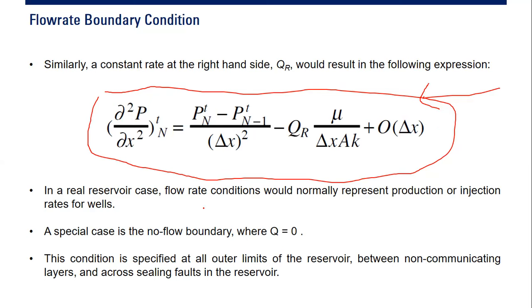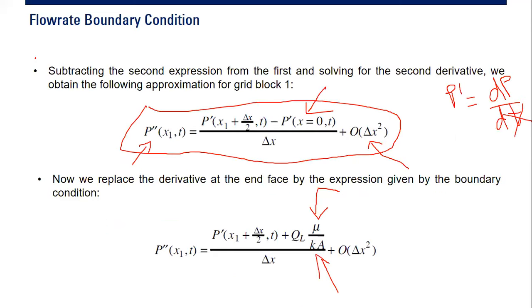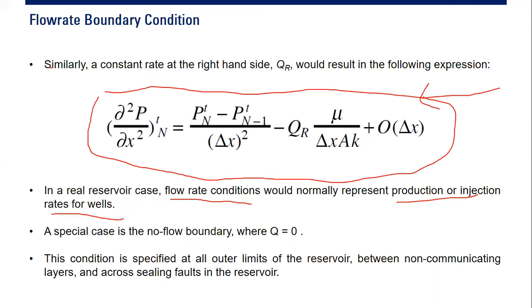In a real reservoir case, flow rate boundary conditions would normally represent production or injection rates for wells. A special case for flow rate boundary condition is the no-flow boundary — where q equals zero. Examples include a fault or a pinch-out. This no-flow boundary condition is specified at all outer limits of the reservoir, between non-communicating layers, and across sealing faults.